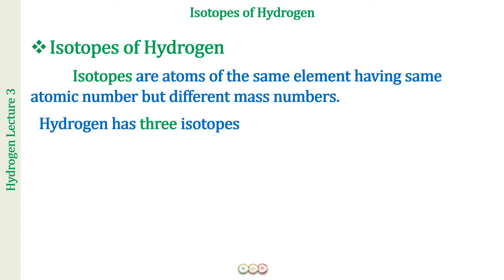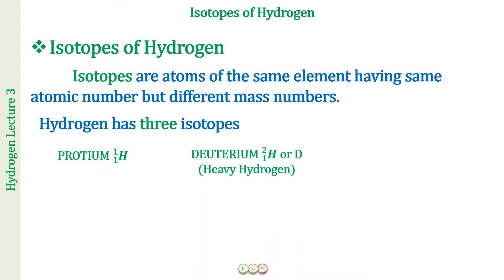Hydrogen has three isotopes. The first one is protium, which is ¹H₁, meaning hydrogen has atomic number one and mass number one. Next we have deuterium, which is ²H₁ — atomic number one, mass number two — also represented by the symbol D, and also called heavy hydrogen. The third isotope is tritium, which has atomic number one and mass number three, also given the symbol T. So the three isotopes of hydrogen are protium, deuterium, and tritium.